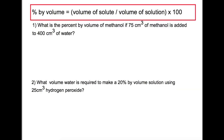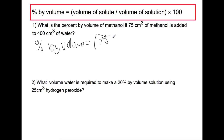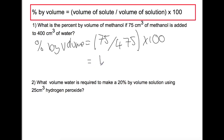Let's look at two calculations. In the first, we're trying to find the percentage by volume of methanol. We have 75 cm³ of methanol and 400 cm³ of water, giving a total solution volume of 475 cm³. Dividing 75 by 475 and multiplying by 100 gives a percentage by volume of 15.8%.